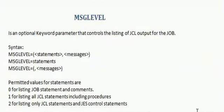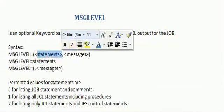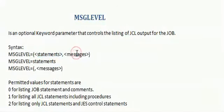MSGLEVEL, or message level, is also an optional keyword parameter that controls the listing of JCL output of the job. It has two parameter values: one is statements and another one is messages. If you code only statements, then no need to mention a comma.